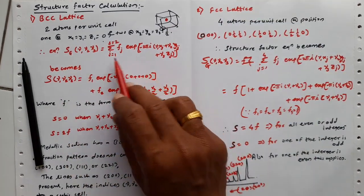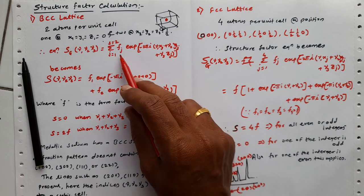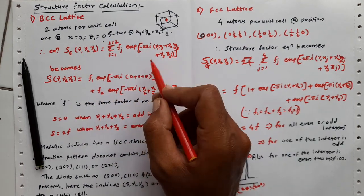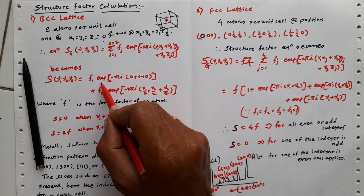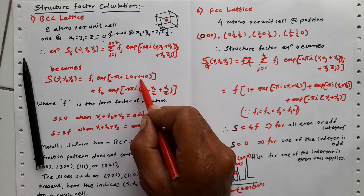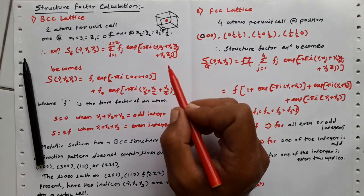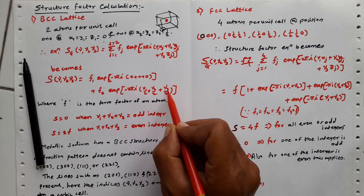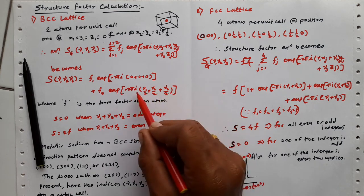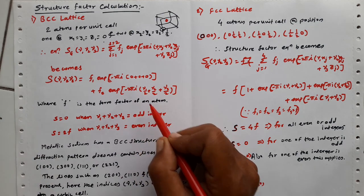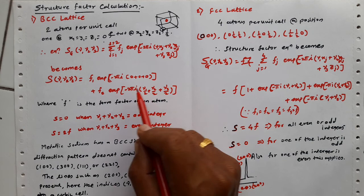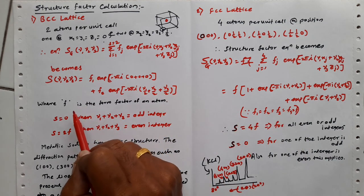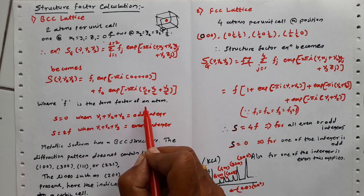Our equation for the structure factor gets modified. If we substitute the values of x, y, and z into the equation, we get F1 times exponential of minus 2 pi i times (0+0+0), since x, y, z are 0,0,0 for the first atom. For the second atom: F2 times exponential of minus 2 pi i times (nu1/2 + nu2/2 + nu3/2). The factor of 2 cancels, and the exponential of 0 becomes 1. F here is nothing but the form factor of the atom.